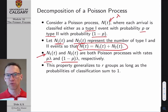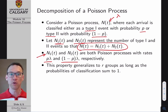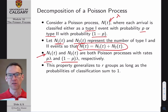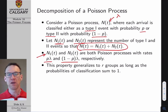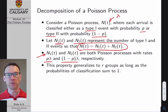This property generalizes to an arbitrary number of groups: dividing a Poisson process into any number of groups based on probabilities that sum to 1 yields individual Poisson processes for each group. There is a proof for this, but it is detailed. Most graduate textbooks on Poisson processes cover it in depth.